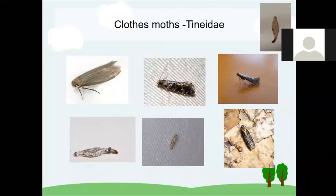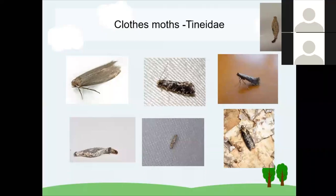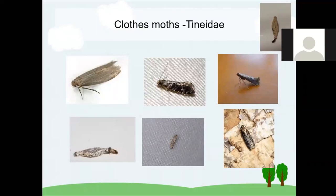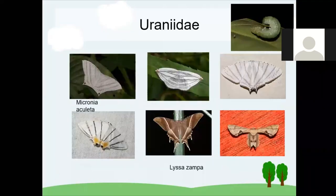The Tineidae family — these are the tiniest moths you see in your room even if it is well-maintained. The top-right picture shows the caterpillar. They can also grow on stored clothes, eating fabric fibers. They almost grow everywhere. Finally, the Uraniidae family — in Northeast India you can see the Lyssa zampa, a big solar moth, and in South India the Micronia aculeata is a very common one.